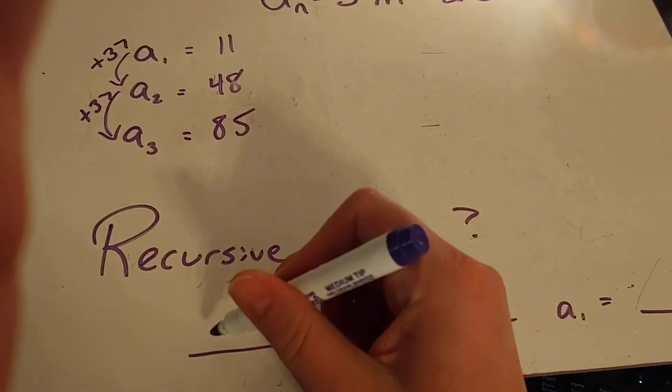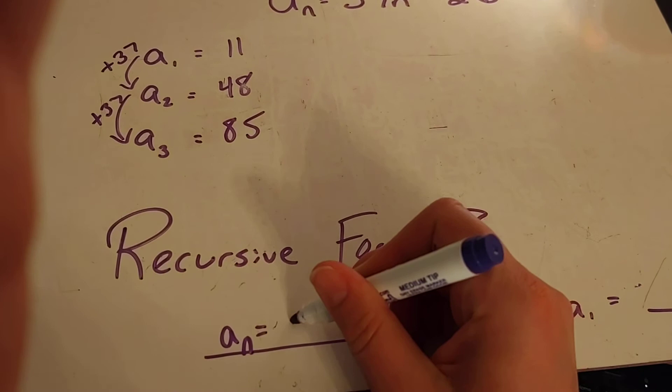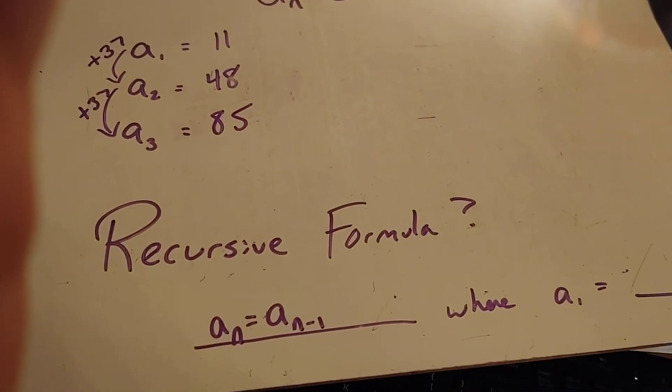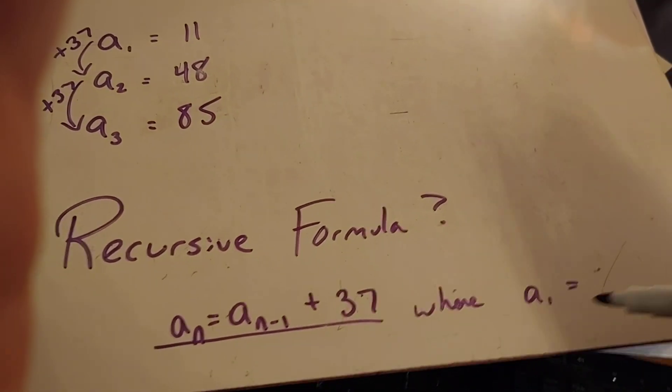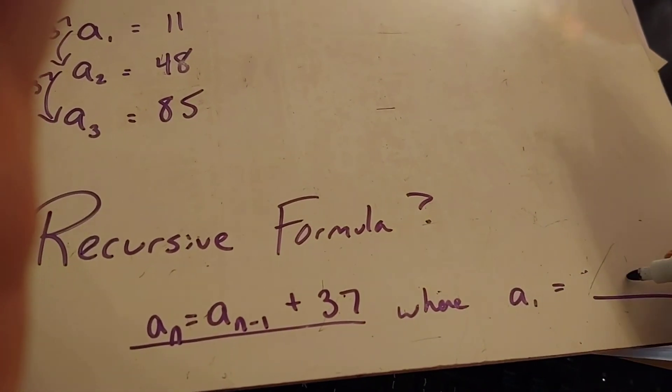Alright, so the formula must be a_n = the previous term, which is a_(n-1), plus 37, where a_1, my first term, is 11.